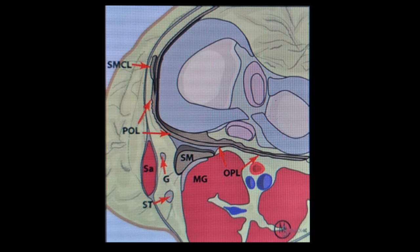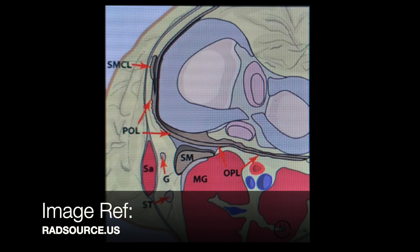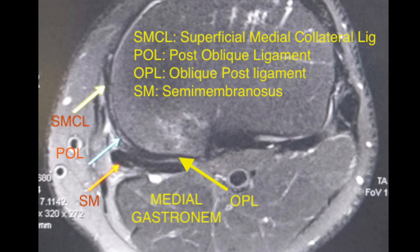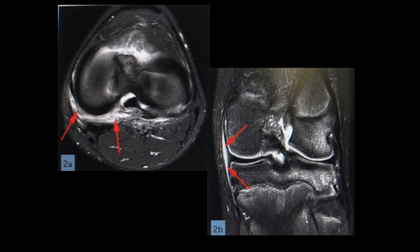Next in our format is the posteromedial corner — a readily identifiable but very underappreciated area. If unidentified, it results in anteromedial rotational instability. The main structures we examine here are the semimembranosus tendon, oblique popliteal ligament, posterior oblique ligament, posterior horn of the medial meniscus, and the medial collateral ligament. This is an example of injury where there is significant edema in the posteromedial joint capsule and significant fluid separating the superficial and deep fibers of the medial collateral ligament.